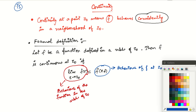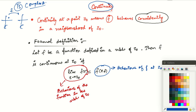Hello friends, welcome to this 15th lecture on complex analysis. In this lecture we will study about the continuity of functions. We have a function from the complex plane to the complex plane. We already discussed what we mean by saying that f has a limit at a point z₀. Now we want to know what is the meaning of saying that f, which is a function from C to C, is continuous at a point z₀.